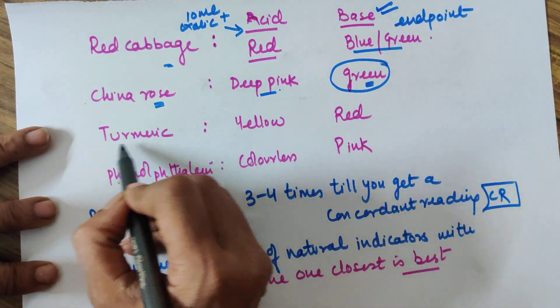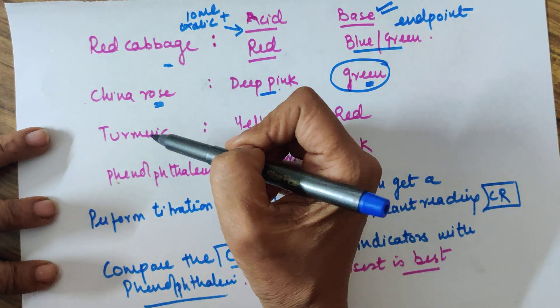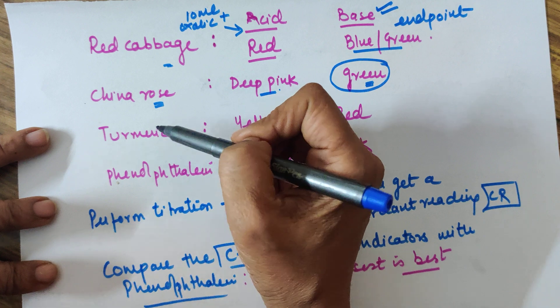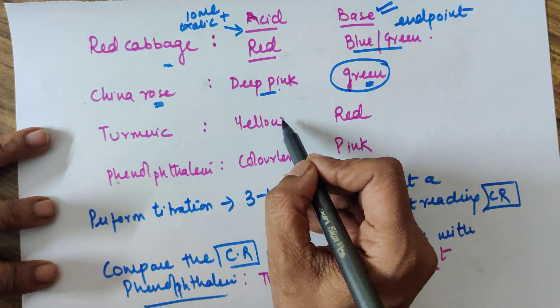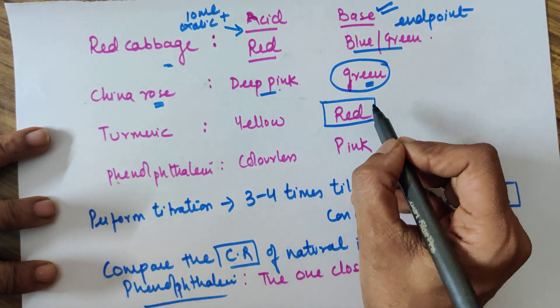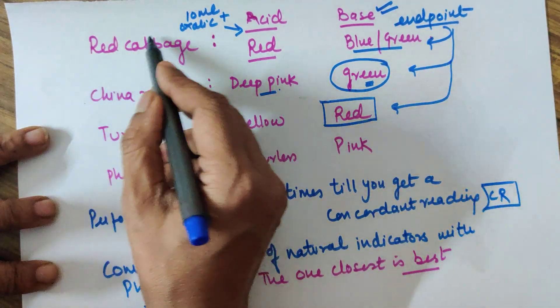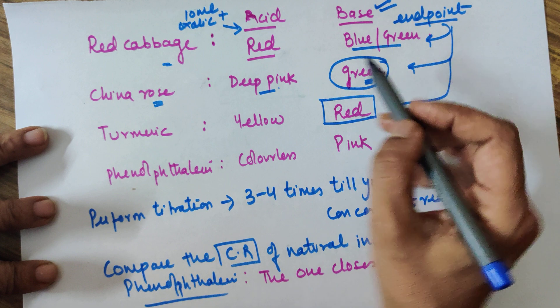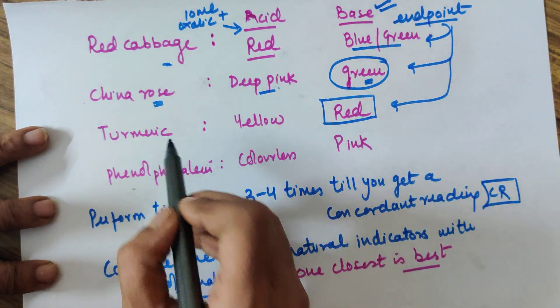When you do the third set of titrations where you are using turmeric as an indicator, 10 ml oxalic acid and you will be adding two to three drops of turmeric solution. In the acid solution it should remain yellow, and when you finish the titration it should turn red. That is the point where you will stop the titration. So your endpoint will be blue-green in case of red cabbage, it could be green in case of China rose, it would be red from yellow in case of turmeric.